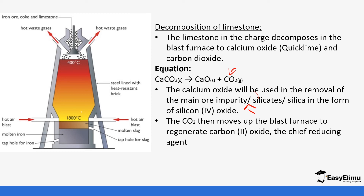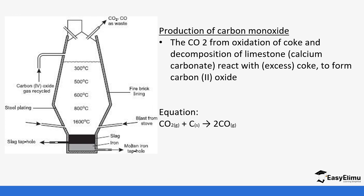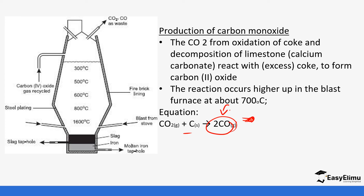The carbon dioxide formed at the bottom moves upwards through the blast furnace, where it reacts with more coke to form carbon monoxide. This carbon monoxide is the main reducing agent that will be used to reduce the iron oxide. This reaction occurs near the top of the furnace at around 700 degrees Celsius, unlike the initial combustion which occurs at the bottom.